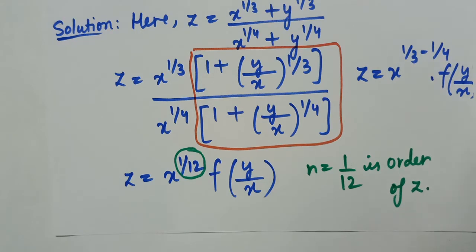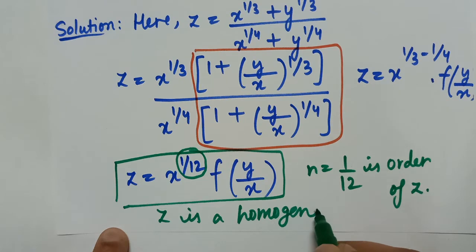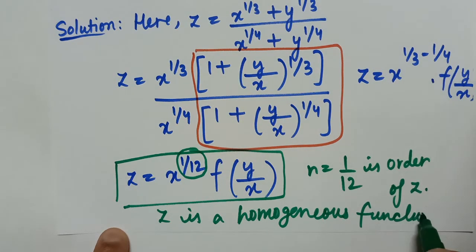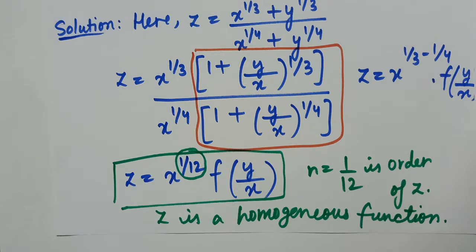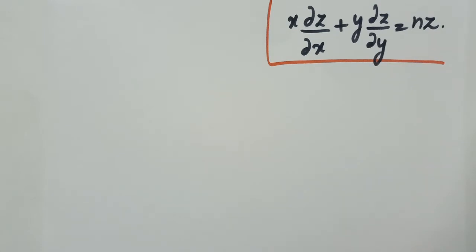Since z is represented in the homogeneous form, z is a homogeneous function. Now we proceed to verify Ehlers theorem, which states: x·(∂z/∂x) + y·(∂z/∂y) = n·z, where n is the order. For our function, n = 1/12, which we have already proved.